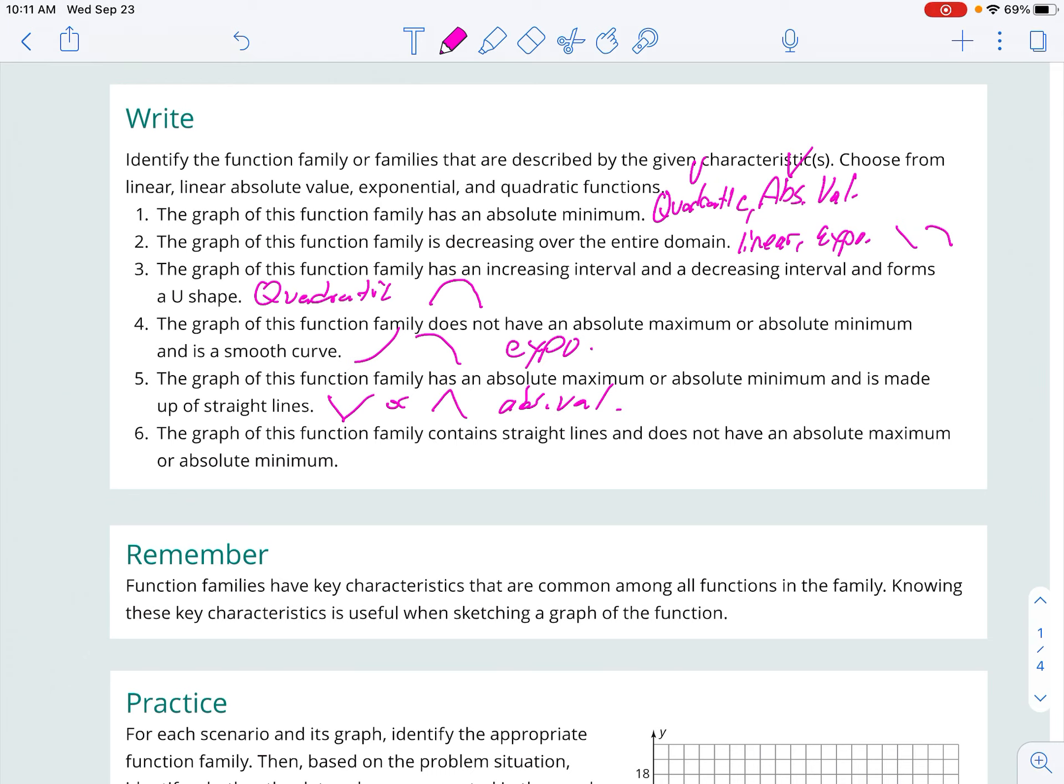The graph of this function family contains straight lines and does not have a max or min. So then just a single line. And that is linears, either increasing, decreasing, or constant.